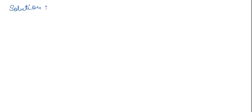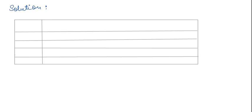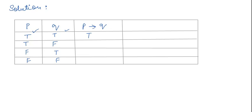First, let us make the truth table. Let p represent the first statement and q the second, and this column is for 'if p then q.' The values for p are true, true, false, false and for q are true, false, true, false. If p is true and q is true, the result is true. If p is true and q is false, it is false. If p is false and q is true, it is true. If both are false, it is true.